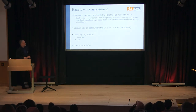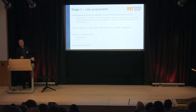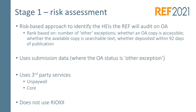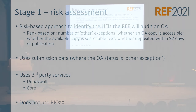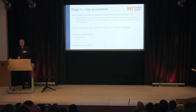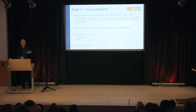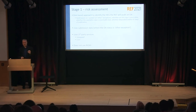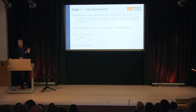To summarise: the risk-based approach ranks you on other exceptions, whether an OA copy is accessible, whether the available copy is searchable text - those are the two data points from Unpaywall - and also whether it's deposited within 92 days of publication, which is from Core. The reason we chose 92 days is because the policy is three months and the longest three-month period in the calendar is 92 days. We recognise there are other lengths being used in institutional practice and also in CRIS systems, but that was the reason we chose 92 days.